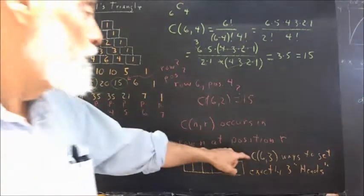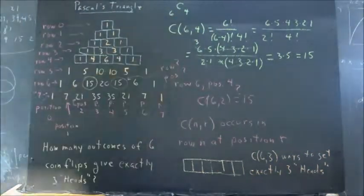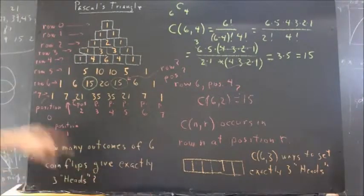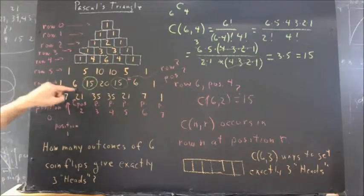Now, we can easily evaluate C of six, three using this, but why don't we just go to Pascal's triangle? C of six, three occurs in row six at position one, two, three.